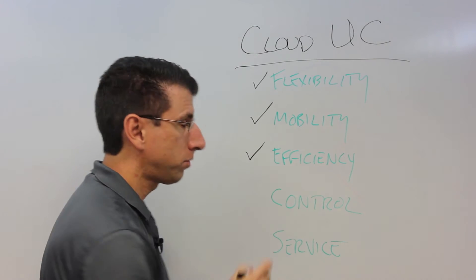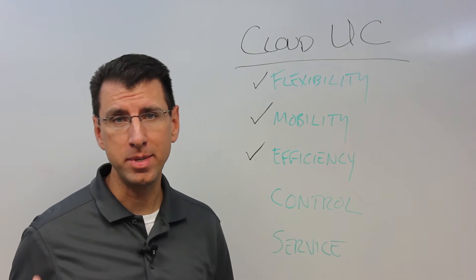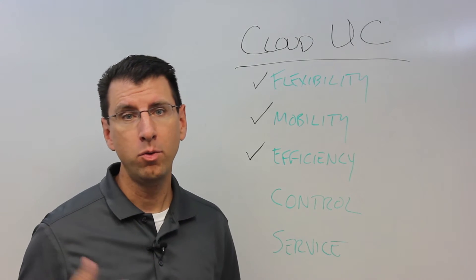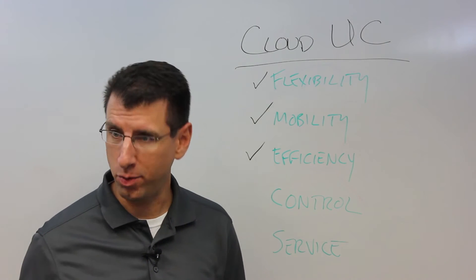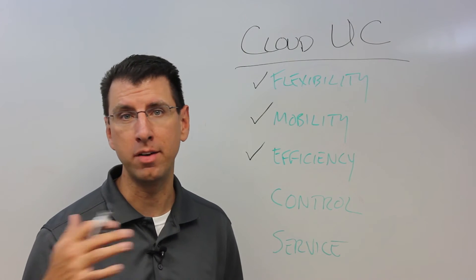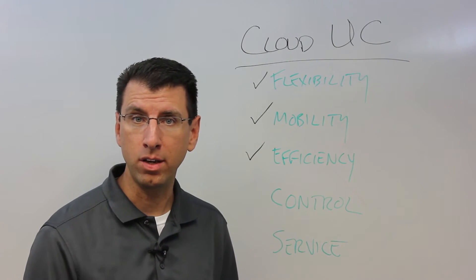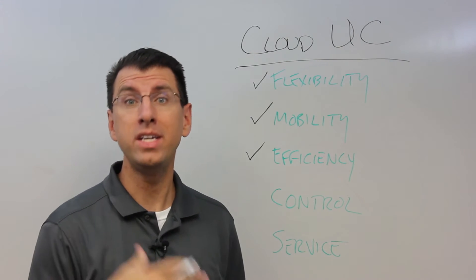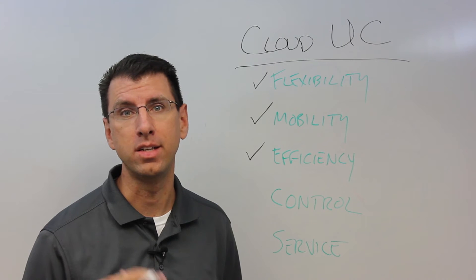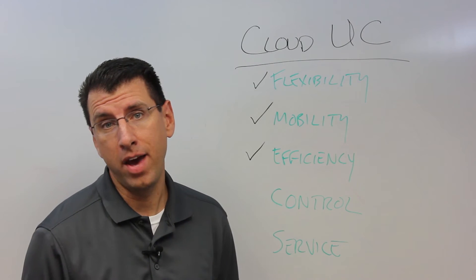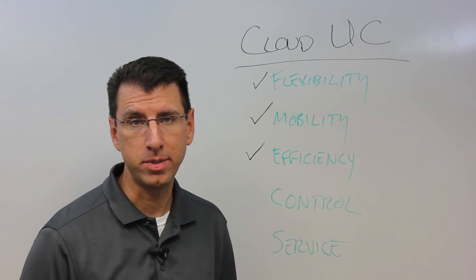The third one is efficiency. You want to take advantage of the economies of scale that cloud UC gives you versus on-premise UC. With on-premise UC, you have to buy all the equipment and deal with maintenance contracts and support agreements. With cloud UC, you push all that to the cloud vendor like West IP Communications. We maintain and upgrade everything, keeping it up to date, so you can take advantage of the latest technology.